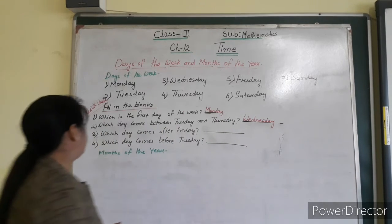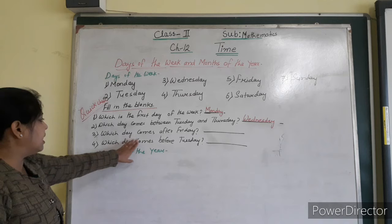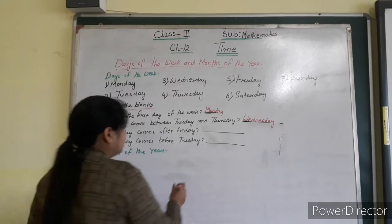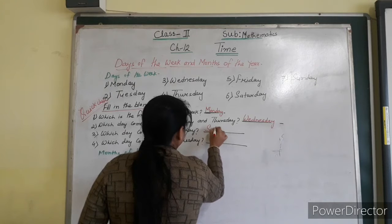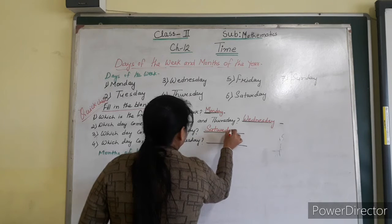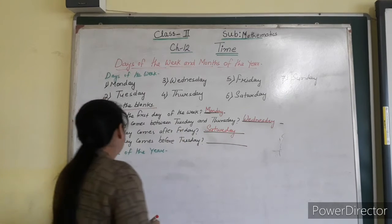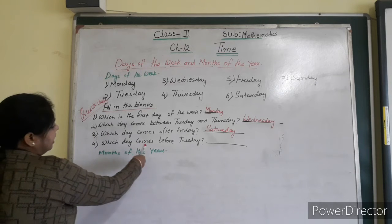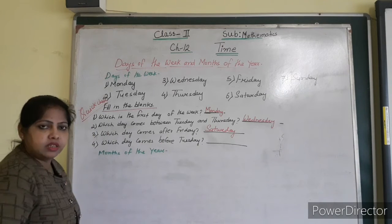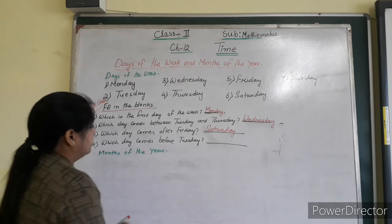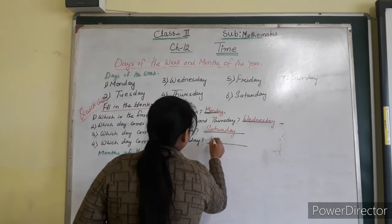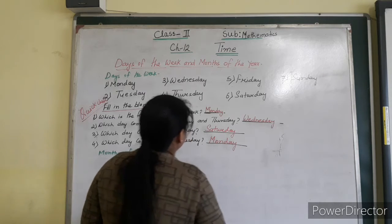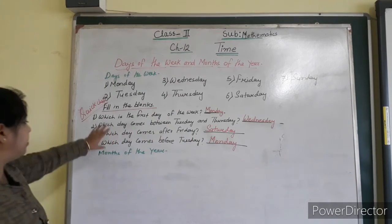Then Number 3: which day comes after Saturday? That is Sunday. Then the next question: which day comes before Tuesday? That is Monday. So like this way, you just fill in the blanks.